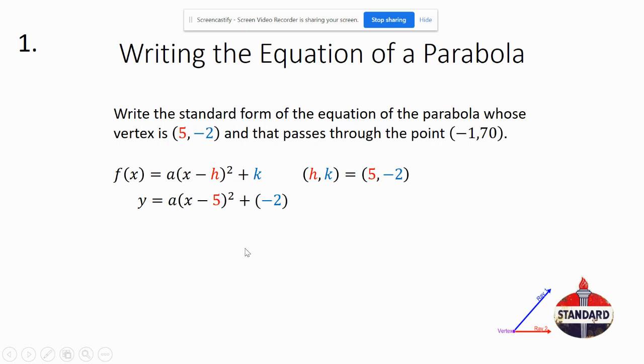And I also know that x value, because I was given a point on the line, so one of the x values is negative 1, and the y value is 70. So I plug those in too. And now I'm going to go ahead and solve for a.